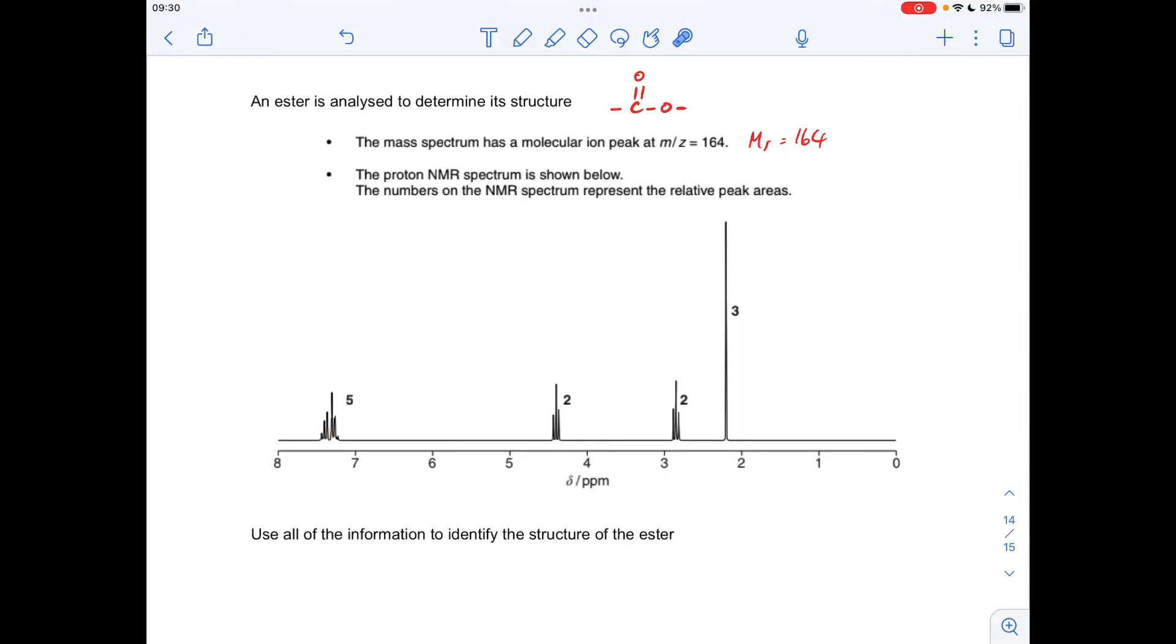Now straight away we can rule out the OH hydrogen for two reasons. One, it's a multiplet, and OH signals are always singlets. And two, an OH signal would have an area of 1, this has got an area of 5. So these are aromatic protons. Now we're not expected to analyze the splitting pattern of aromatic signals, so we don't need to comment on that. All we do need to say is that the area of 5 tells us that we've got C6H5, we've got 5 protons in this aromatic environment. In other words, we've only got one attachment, one substituent on the benzene ring.